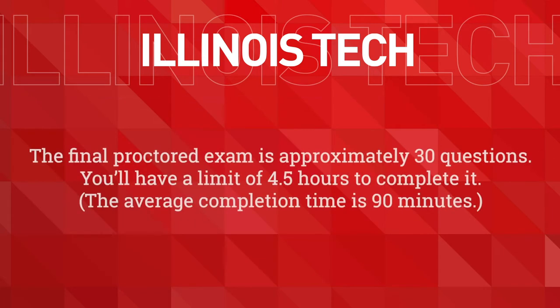The exam is approximately 30 questions and you'll have a limit of four and a half hours to complete it, though the average completion time is 90 minutes. Once you successfully pass your proctored exam, you can register for Math 151.